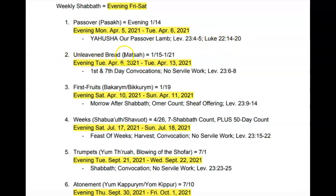Unleavened Bread runs for seven consecutive days from April 6th to April 13th, 2021, from sundown to sundown. The first and seventh days are supposed to be convocations or set-apart gatherings. If you do not have anyone to have convocations with, you can simply have it in your home. No servile work is to be done on those days. You can learn more about that in Leviticus 23, verses 6 through 8.